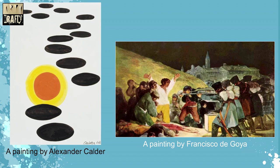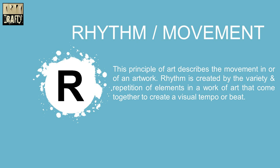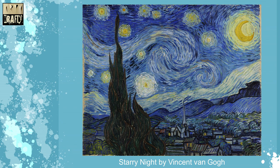The second example of emphasis is a painting by Goya. Rhythm is created by the variety and repetition of elements in a work of art. It is clearly shown in the painting Starry Night by Vincent van Gogh.